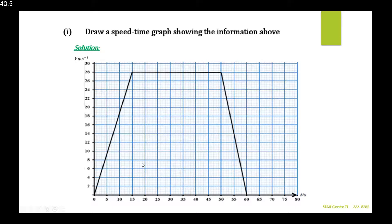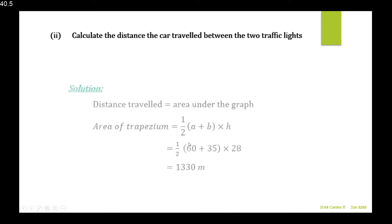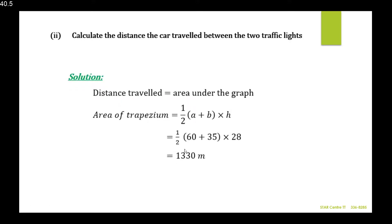There are two methods: find the area of the trapezium, or break the shape into two triangles and a rectangle and add them. Using the trapezium method: area = ½ × (a + b) × h, where a and b are the parallel sides. That gives ½ × (60 + 35) × 28 = 1330 meters.